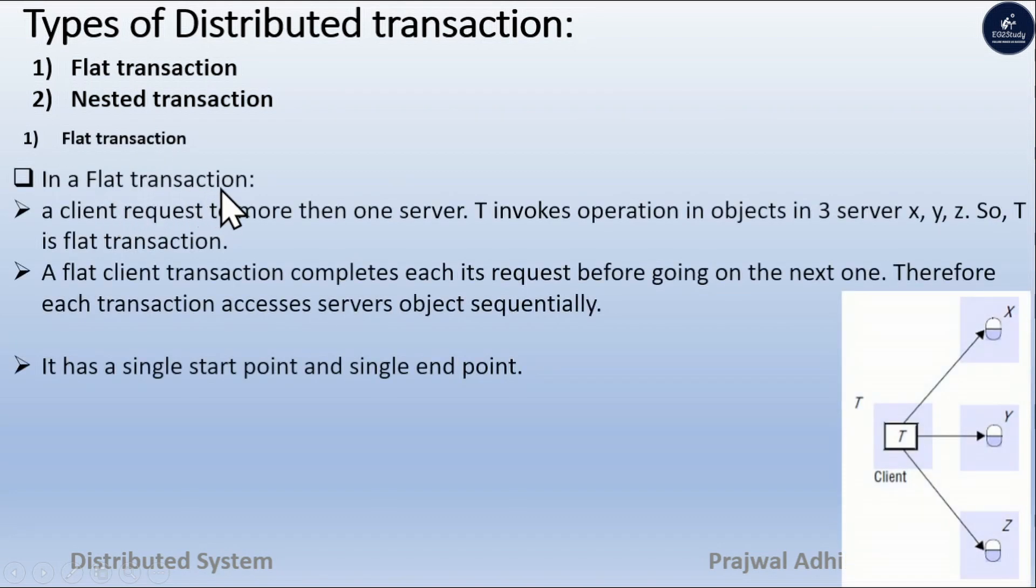In a flat transaction, a client request to more than one server. Here, in the figure, T invokes operation in objects in three servers X, Y, Z. So, T is flat transaction.